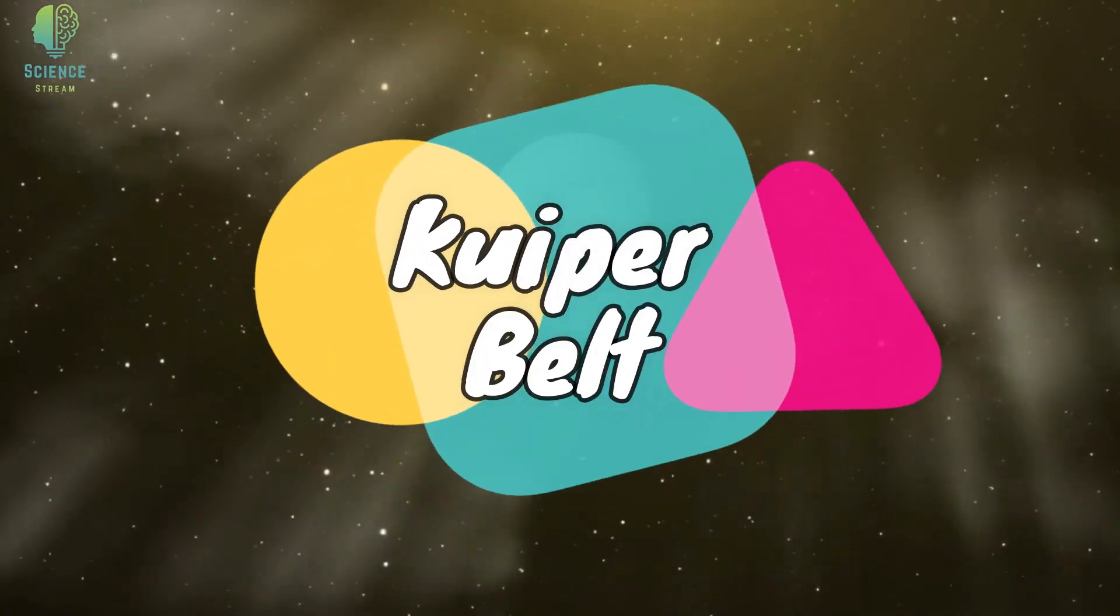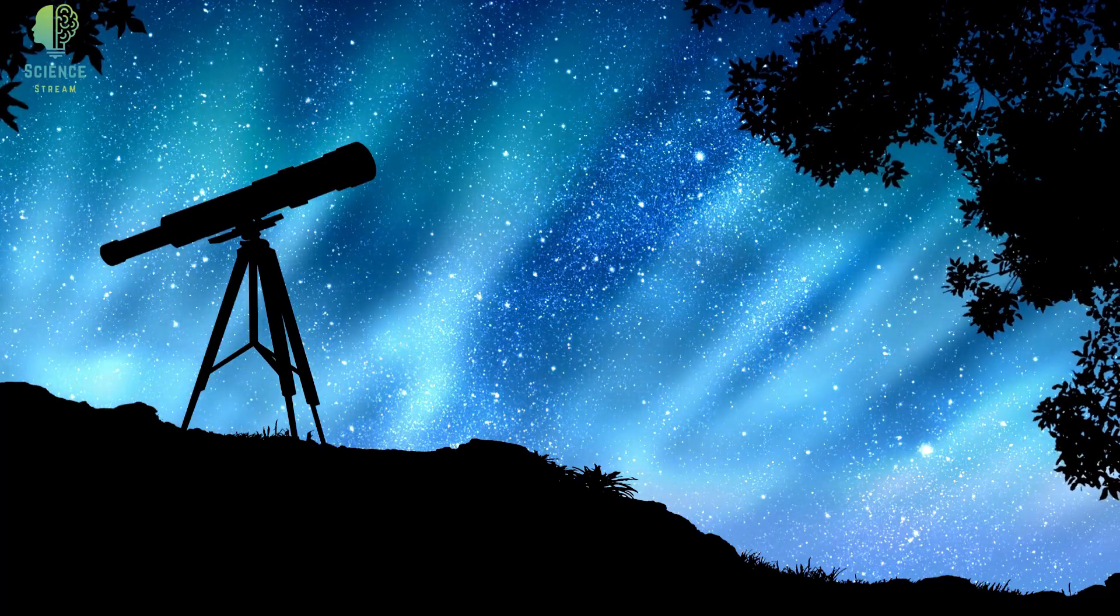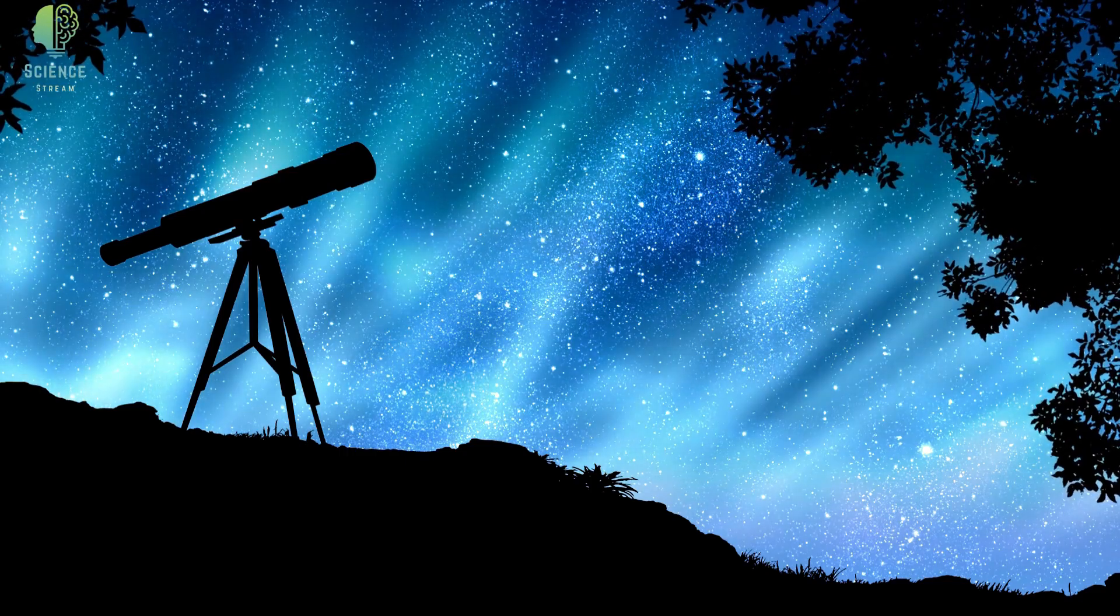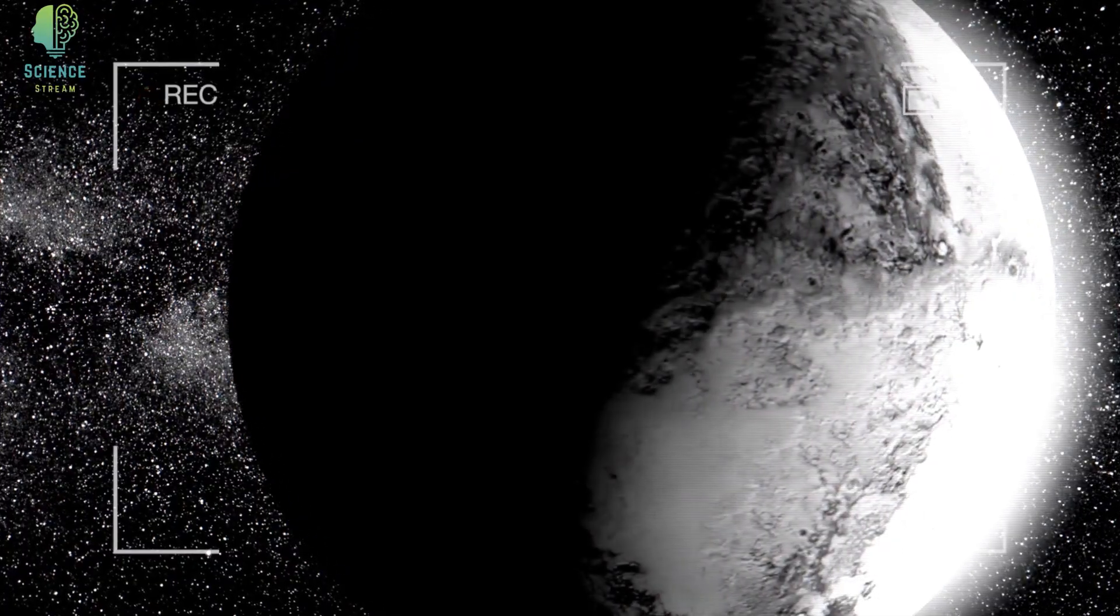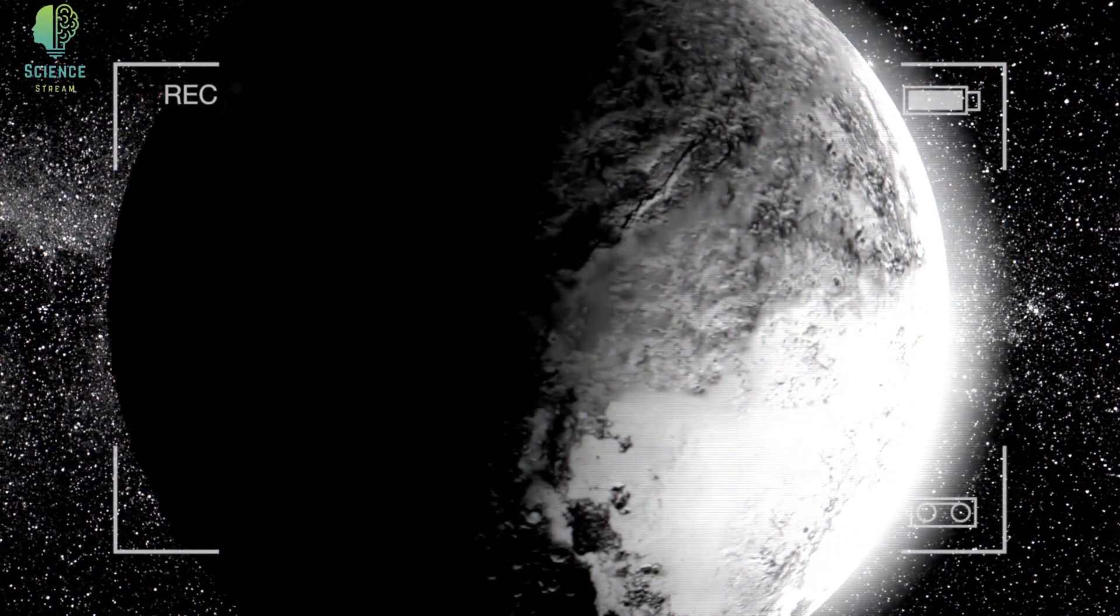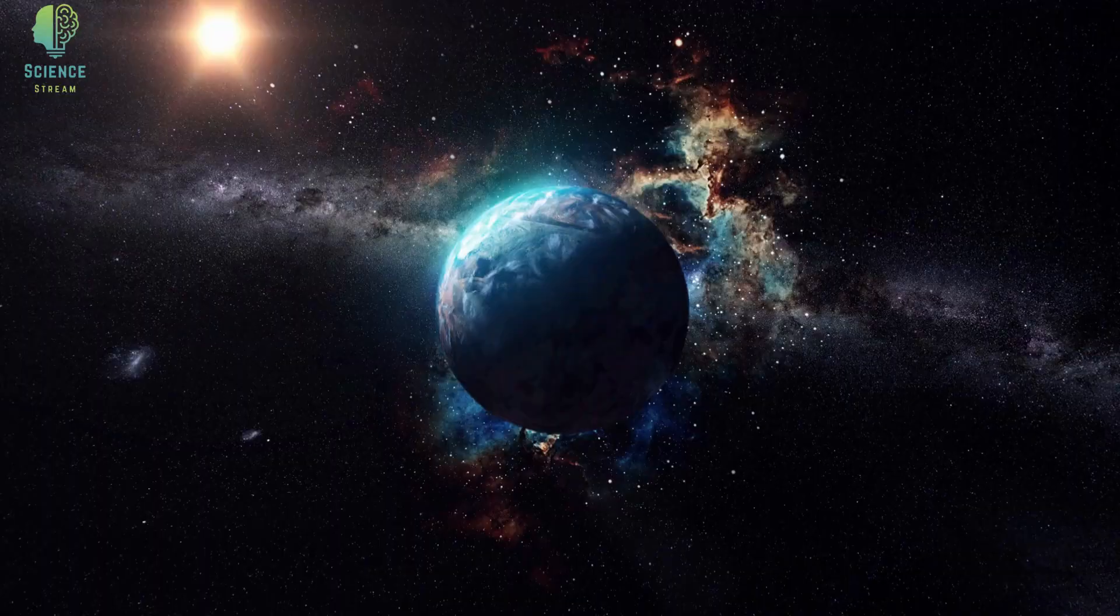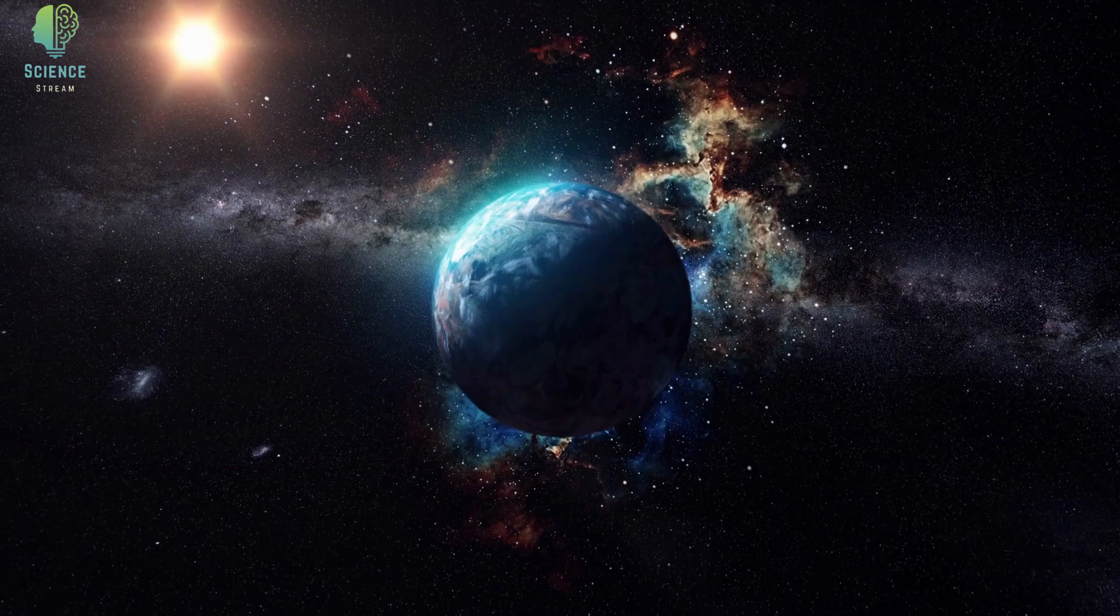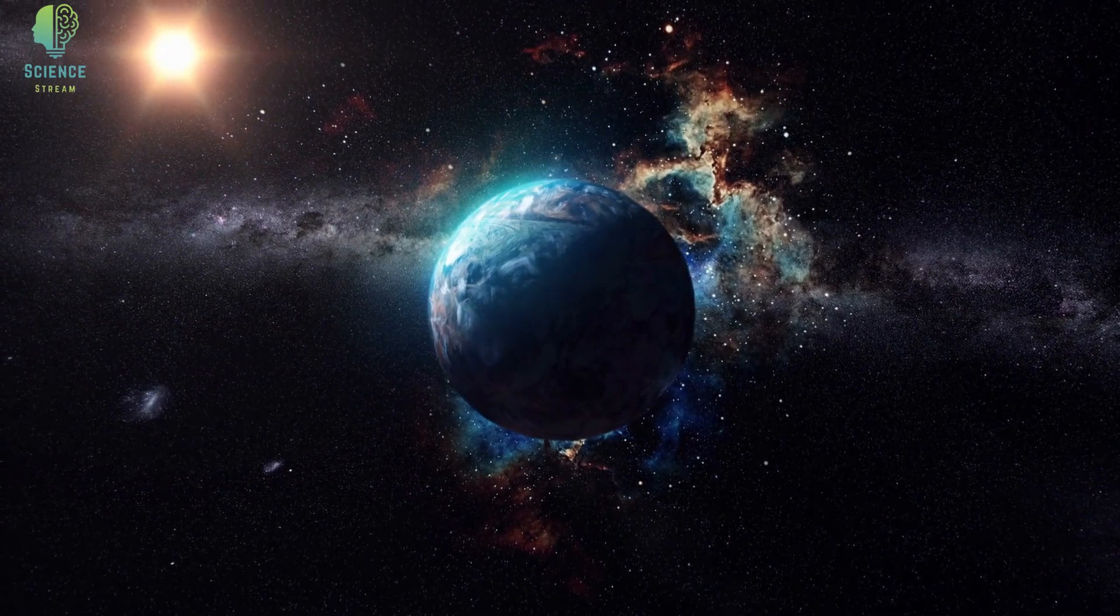What is the Kuiper Belt? Dr. Mike Brown is a professor of planetary astronomy at Caltech. He's best known as the man who killed Pluto, thanks to his team's discovery of Eris and other Kuiper Belt objects. We asked him to help us explain this unusual region of our solar system.